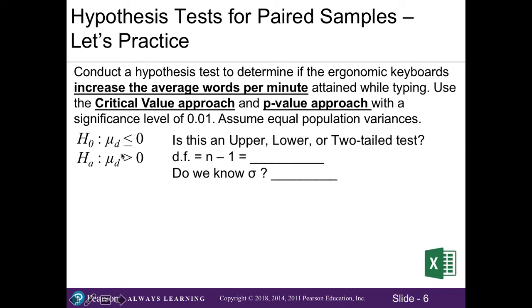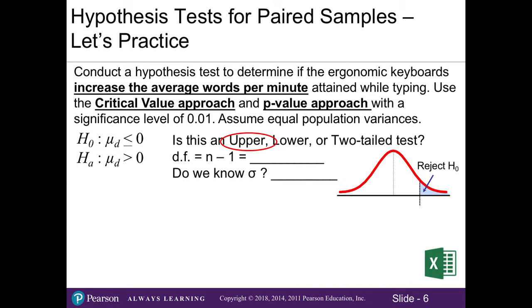Because we have a greater-than symbol in our alternative hypothesis, this tells us we are working with an upper-tail test. Our alpha, or significance level, is 0.01. Next, we identify our degrees of freedom. Since we're working with one population — the administrative assistants typing on keyboards — we use n minus 1, which is 10 minus 1, equaling 9.